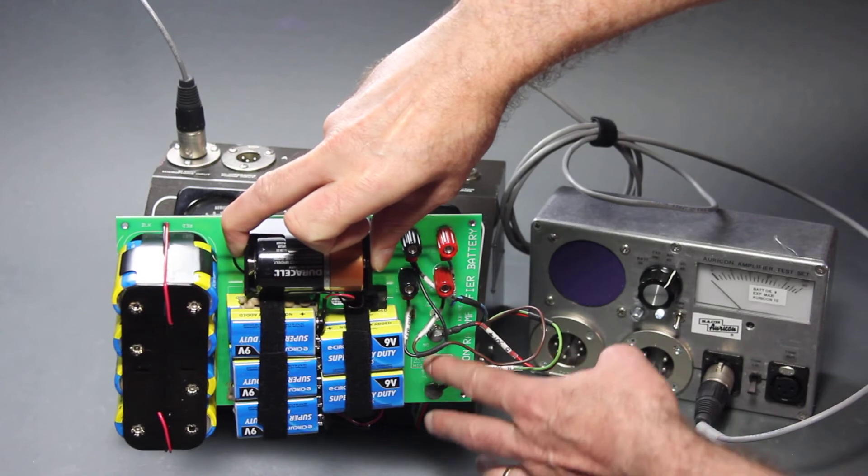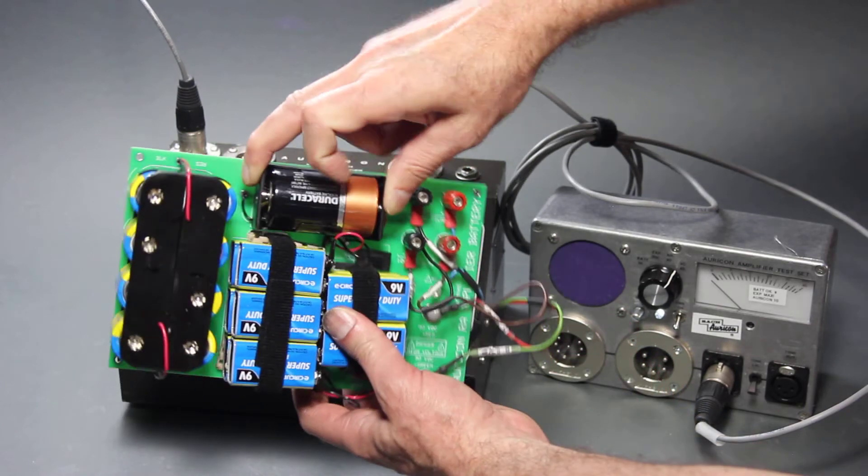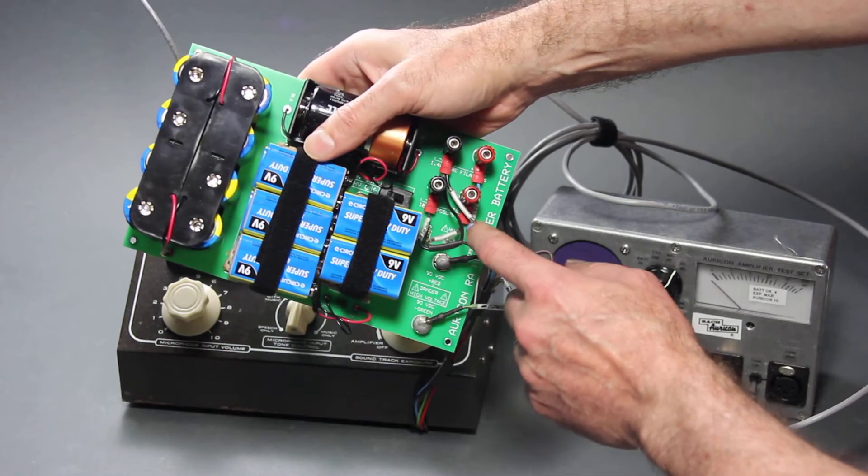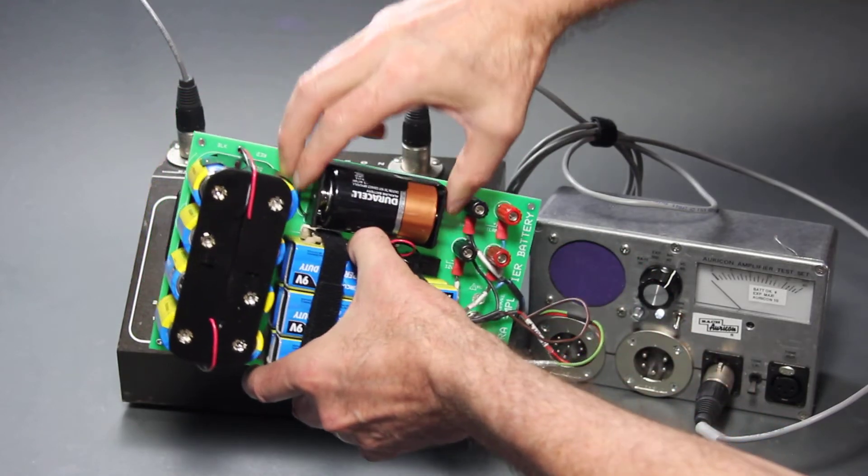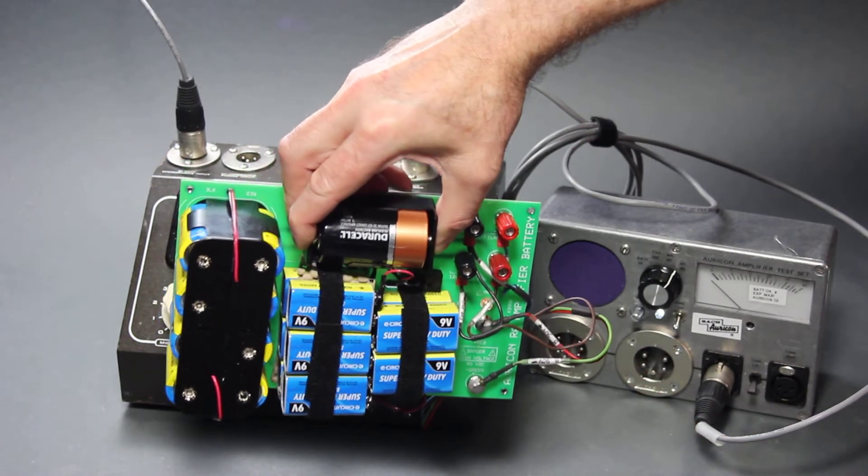I switch it off, the lamp goes off, and then these two contacts here are perfectly safe to touch and handle. I'll go ahead and switch it back on, and the amplifier is now functional.